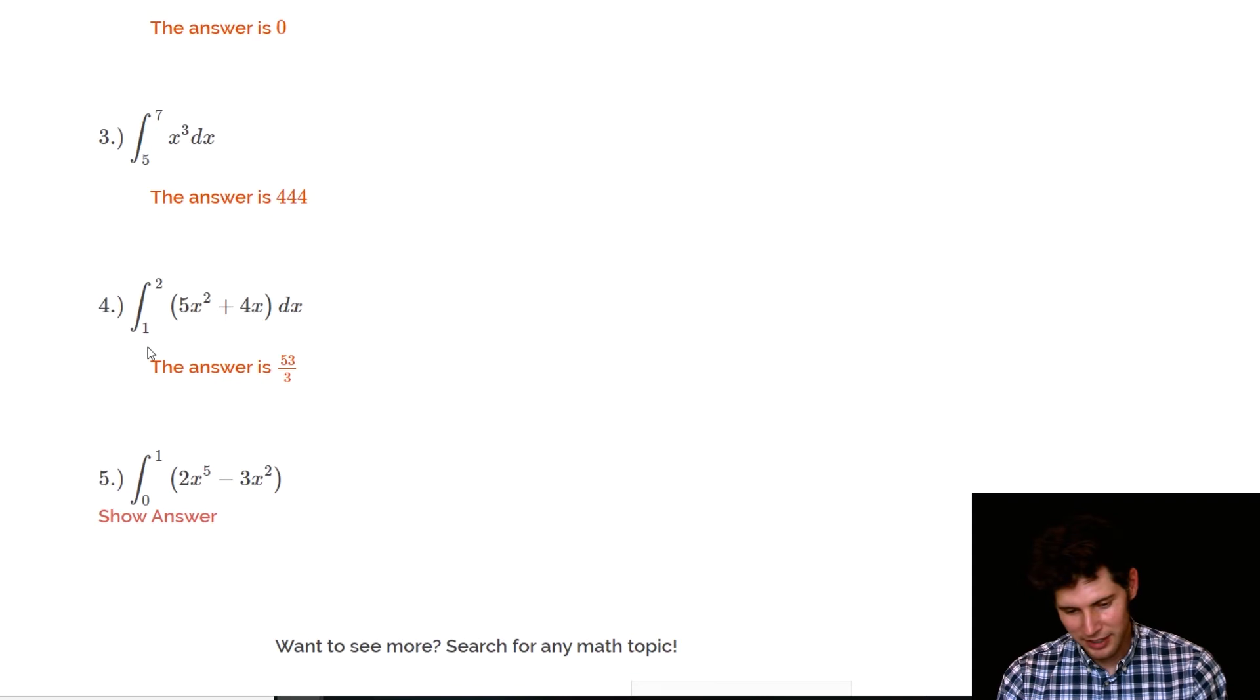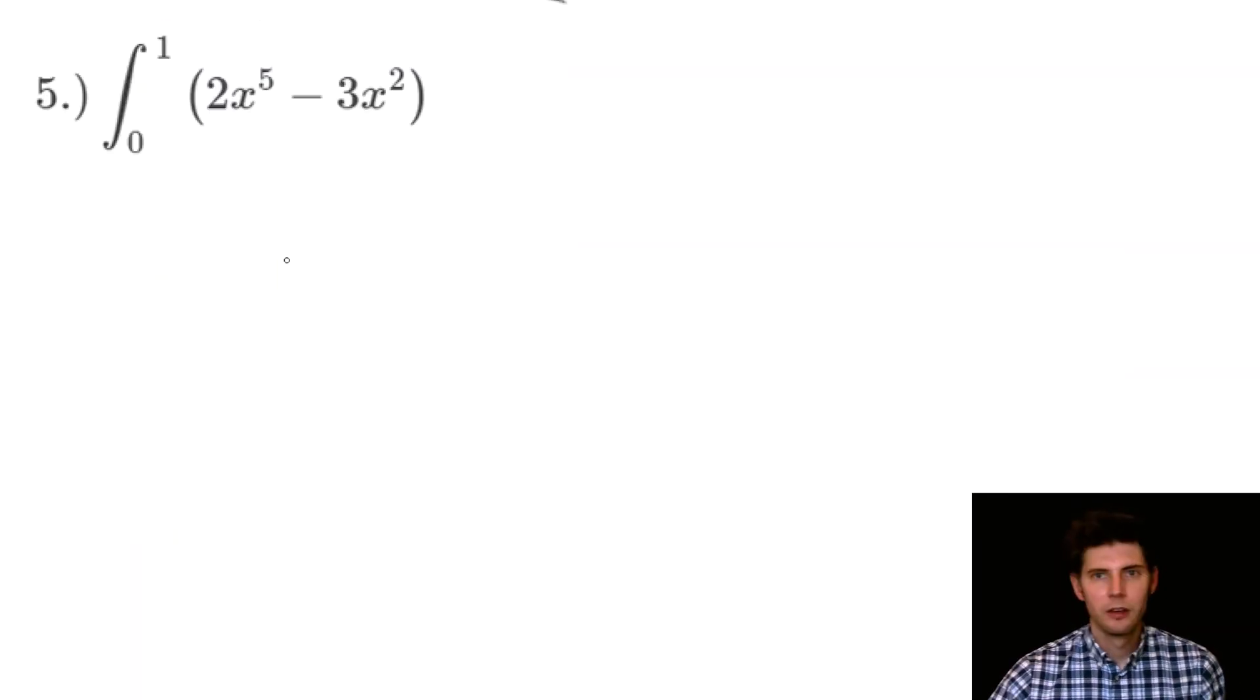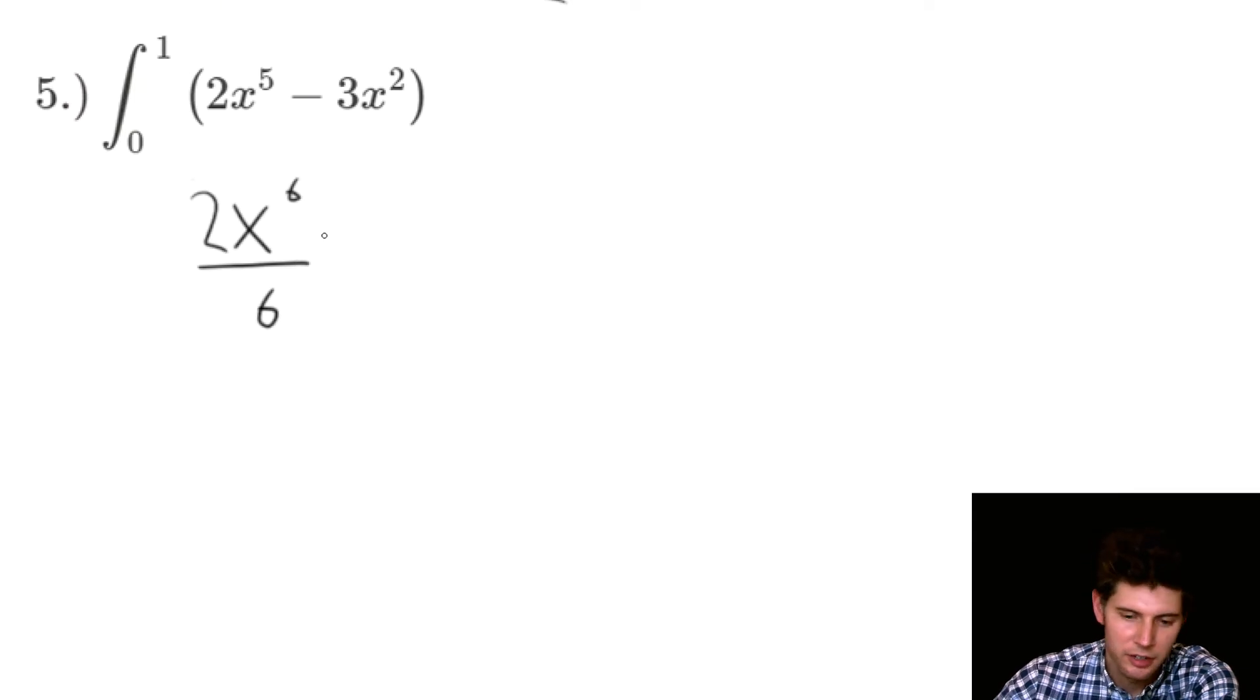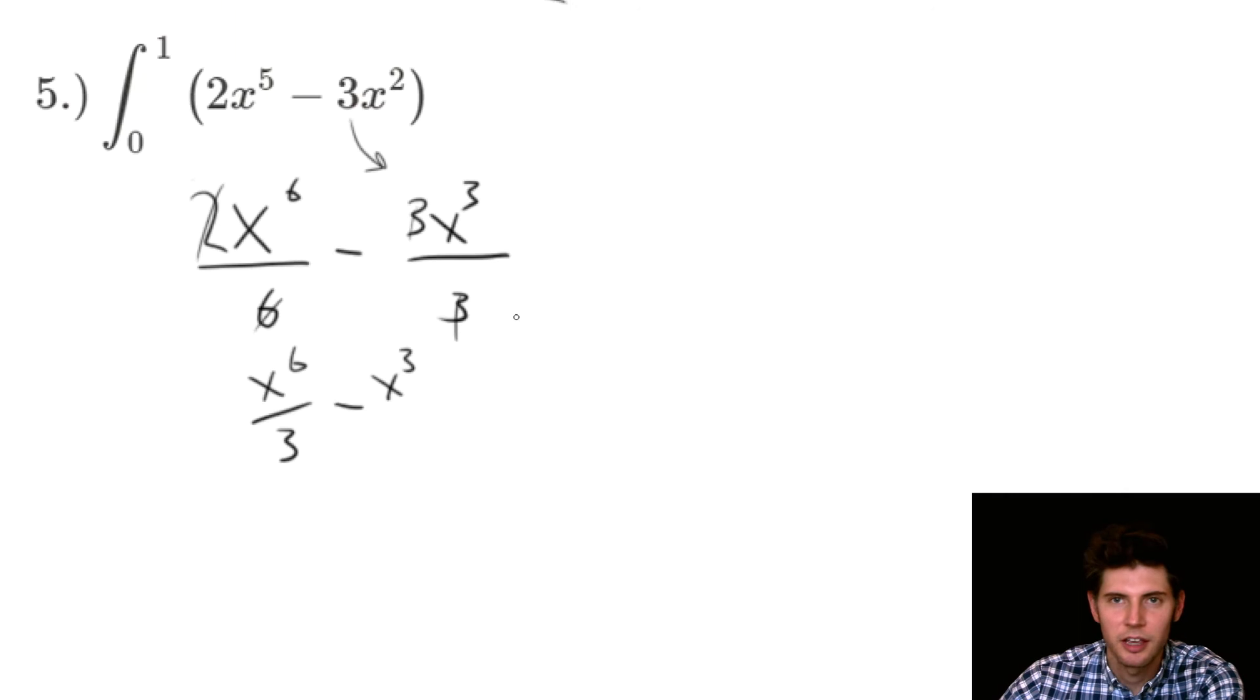The next one is number five, which is the integral from zero to one of two x to the fifth minus three x squared. It's our last one. So first we take this x to the five. We're going to add one to it to give us x to the sixth, and we're going to divide by six, and the two is still there. Minus this x squared is going to become x cubed. We're going to divide by three, and this three is brought down. And then we can simplify this. Two over six, this becomes x to the sixth over three, because these each reduce. Minus, and it's just x cubed, because the threes cancel. And we're evaluating from zero to one.